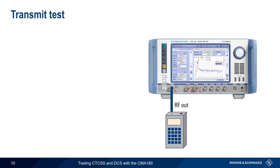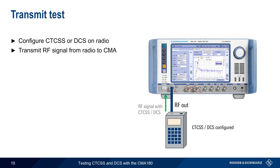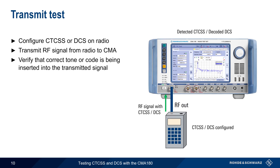Now let's look at transmit tests. In this case, we want to verify that the radio is transmitting the correct CTCSS tone or DCS code, so no audio connection is required between the radio and the CMA. After configuring a CTCSS tone or DCS code on the radio, the radio transmits the signal into the CMA180. The received radio frequency signal from the radio is then analyzed to make sure that the correct tone or code is being inserted into the transmitted signal.